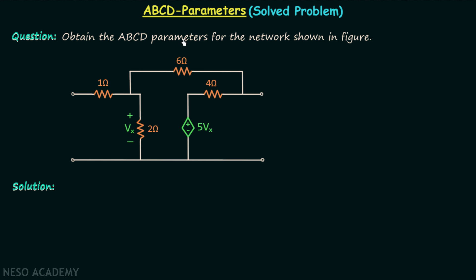Obtain the ABCD parameters for the network shown in the figure. This is the two-port network given in the question and we are required to find ABCD parameters, or T parameters, or transmission parameters of this two-port network. We already know how to find ABCD parameters from Z parameters, so pause the video and try to solve the question on your own.